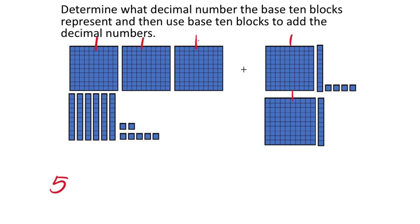Then I would look at my tenths, which is 0.1. How many tenths do we have? We're looking at the columns now. That would be 1, 2, 3, 4, 5, 6. And since we're adding, we would add these other ones: 7, and then 8. So in terms of tenths, we have 8 of those. Since it's a decimal, I'm going to put the decimal there — we've got 5 ones and 8 tenths.